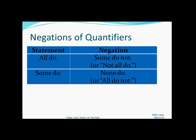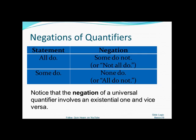When we negated all do, we used some do not. So notice that the negation of the universal quantifier all was the existential quantifier, some with a negation not. And when we negated some do, which had an existential quantifier, we ended up with none do, a universal.